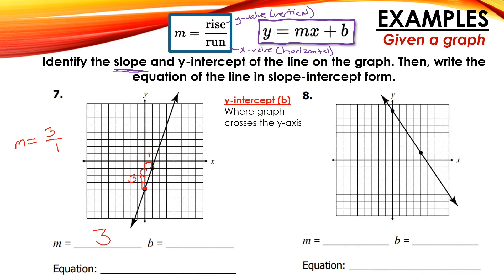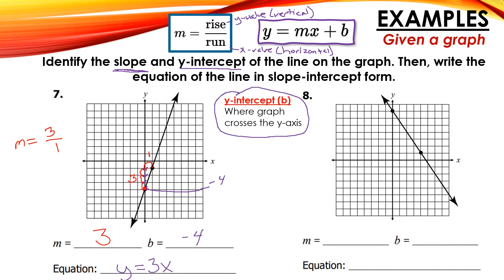Always reduce. Now b is your y-intercept — that is where the graph crosses the y-axis. Counting down from zero: 1, 2, 3, 4 — so my b is negative 4. Then I just use this information to write my equation: y equals 3x. We replace m with 3, and b is negative 4, so that is minus 4. And that's it — y equals 3x minus 4.